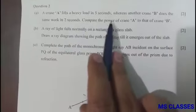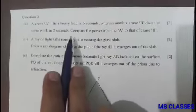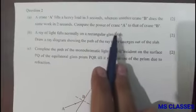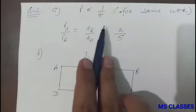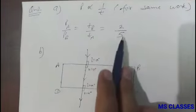Question 2(a): A crane A lifts a heavy load in 5 seconds, whereas another crane B does the same work in 2 seconds. Compare the power of crane A to that of crane B. Power is inversely proportional to time, so we can find the ratio as 2:5.